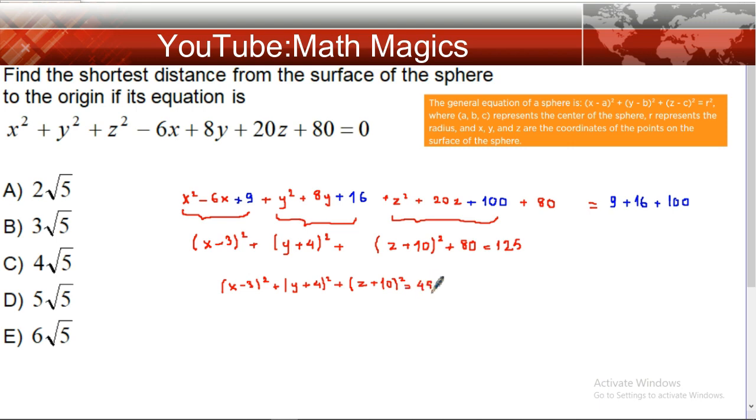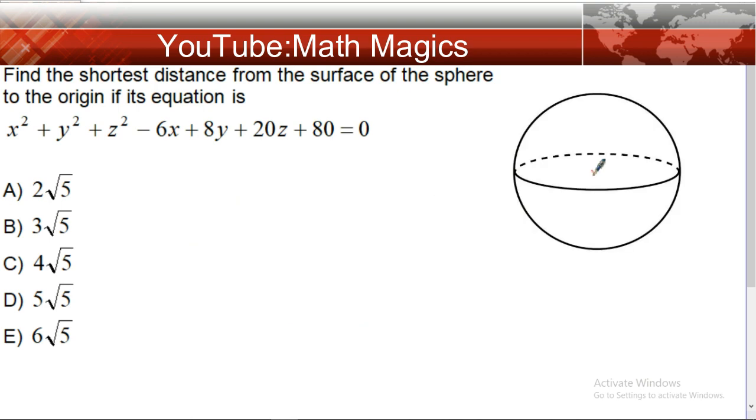45. The center of the sphere is (3, -4, -10), and the radius is √45, which equals 3√5. Now if we draw the sphere, we know the